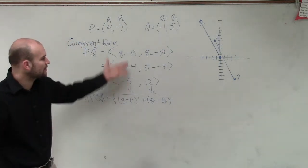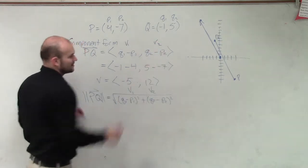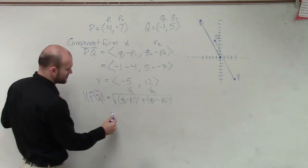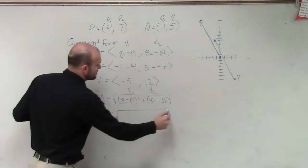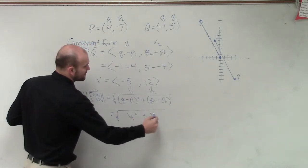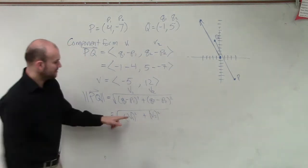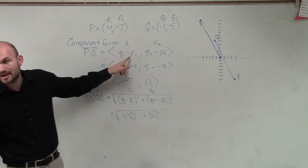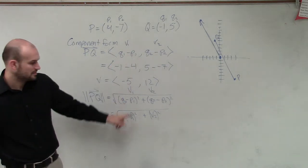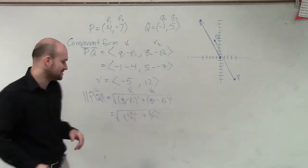But remember that we already worked on this. We already know that this is V1 and this is V2. We now know that this is the same thing as V1 squared plus V2 squared, because V1 is Q1 minus P1. So therefore, I simply need to take V1 squared and then take V2 squared.